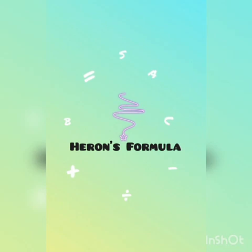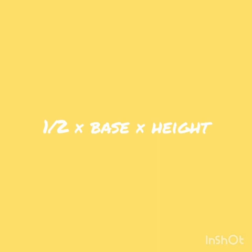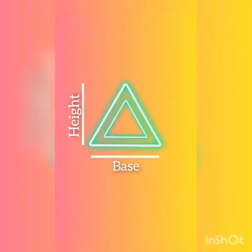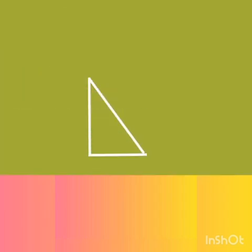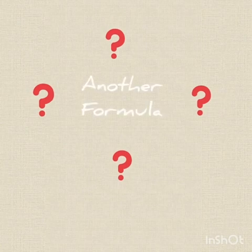Heron's formula. We have studied in earlier classes about the area of triangles. We know that area of a triangle is equal to half into base into height. This formula can be used only when we have the values of base and height given. But if the length of three sides is given, then we need another formula to find the area of the triangle.